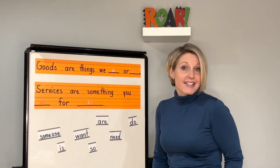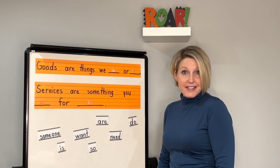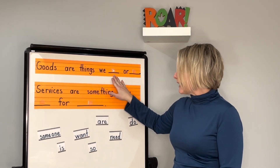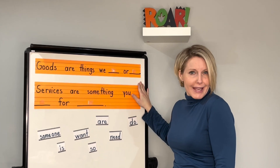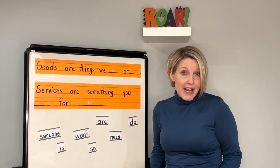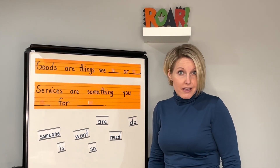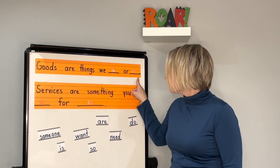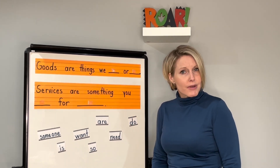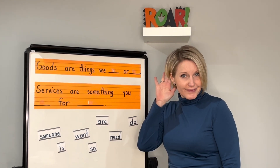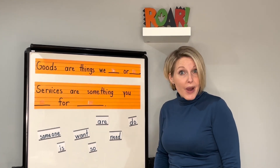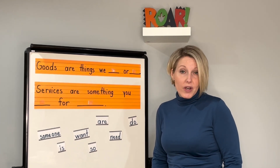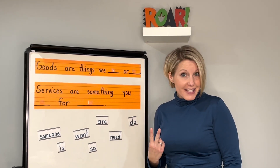We have two sentences today. Our first sentence says, "Goods are things we blank or blank." Let's think back to our story that we read about goods and services. What do you remember from the story? That's right — goods are things we want or need. We need to find the words want and need.